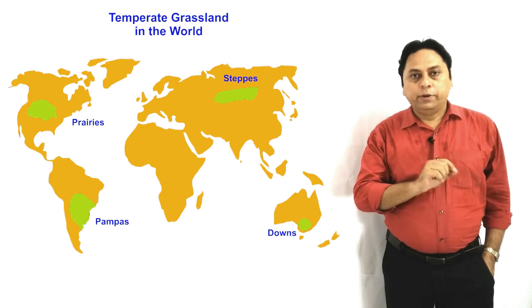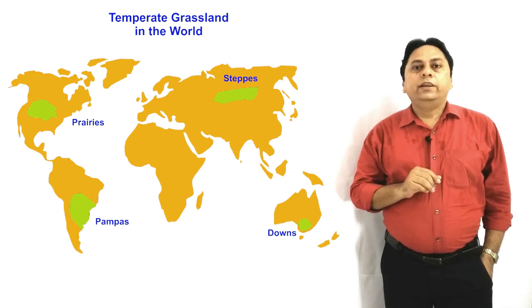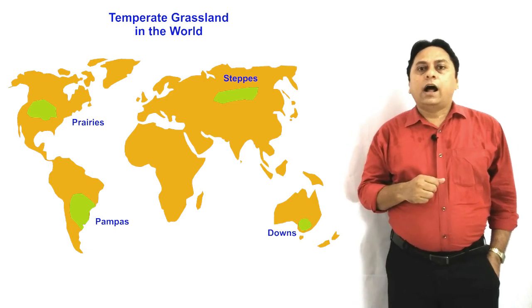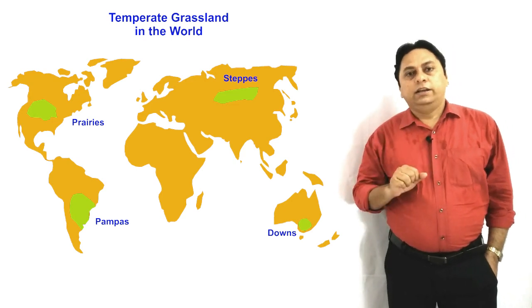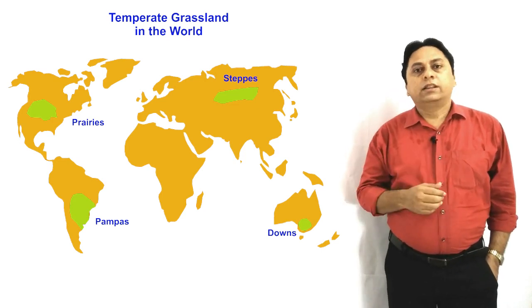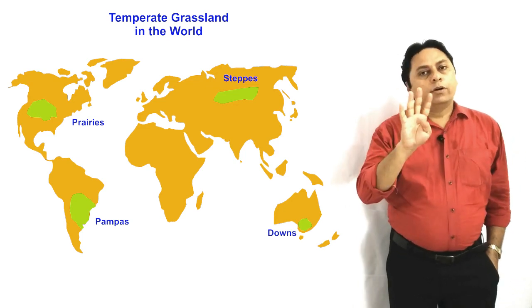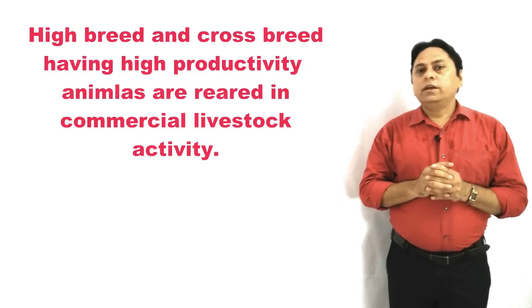The four important temperate grasslands are: Pampas in Argentina, South America; Prairies in North America; Steppes in Russia (Central Russia); and Downs in Southeast Australia. There is also the Veld in South Africa, but it is a very small area. So remember: Pampas in South America, Prairies in North America, Steppes in Asia, and Downs in Australia — these are the four important temperate grasslands where commercial livestock rearing is practiced.